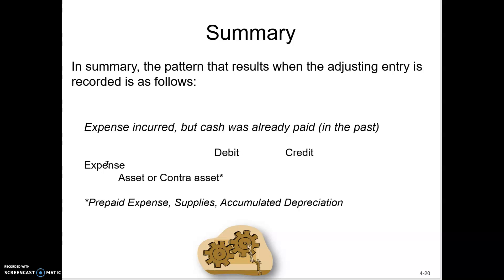Supplies is treated like a prepaid expense. A new term we're going to learn in this chapter is contra accounts — specifically a contra asset account called accumulated depreciation. That's a new twist in this chapter. So that's the theory behind adjusting entries. In my next video, we'll talk about these categories — deferred expenses, deferred revenue, accrued expenses, and accrued revenue — and learn what those adjusting entries are.